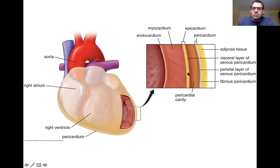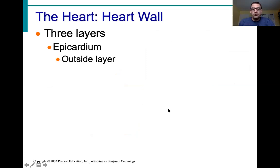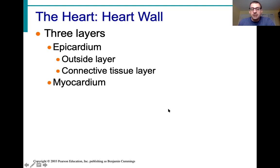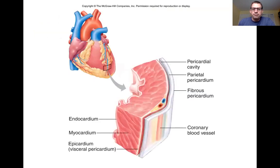The wall of the heart itself has three layers: the outermost epicardium, which is connective tissue in contact with the visceral pericardium; the middle myocardium, which makes up most of the wall and is composed of cardiac muscle; and the thin endocardium, which lines the inside of the heart chambers. Here's another picture showing the pericardial cavity, parietal pericardium, visceral pericardium, epicardium, myocardium, and endocardium.